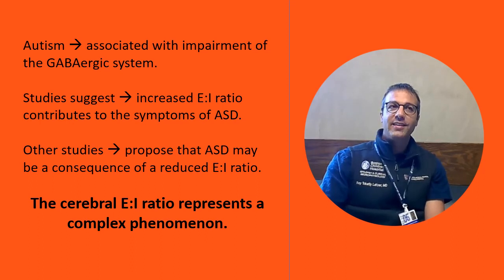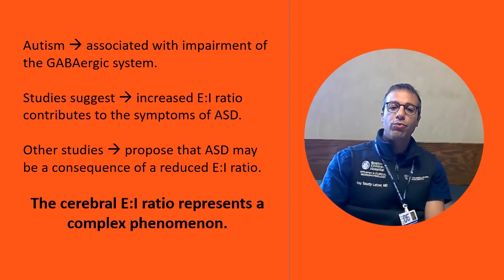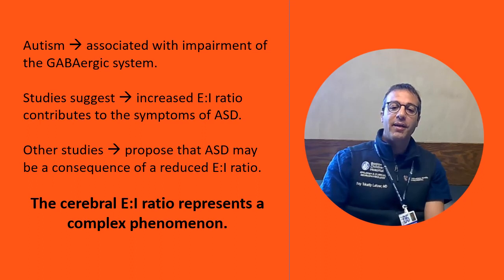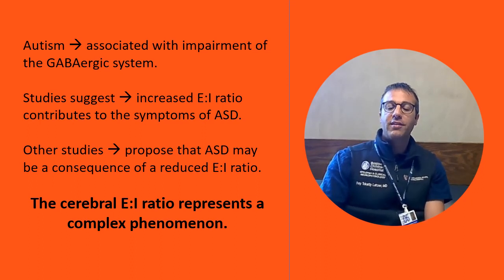Overall, as I stated previously, we realized that the brain's excitation-inhibition ratio is a very complex thing, which is probably driven by complex GABAergic homeostatic mechanisms that result in autism and other developmental deficits.